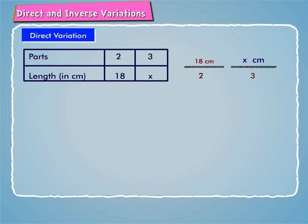It is a case of direct variation. So, the ratio is constant. Therefore, 2 by 18 equals 3 by x. Using cross multiplication, we get 2 times x equals 3 times 18. Therefore, x equals 3 times 18 by 2 equals 27. Hence, length of the longer piece is 27 cm.